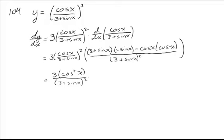And we can start to distribute here in the results from our quotient rule. So that's going to be a negative 3 sine x minus sine squared x. And then multiplying the two cosines together, we get a minus cosine squared x.